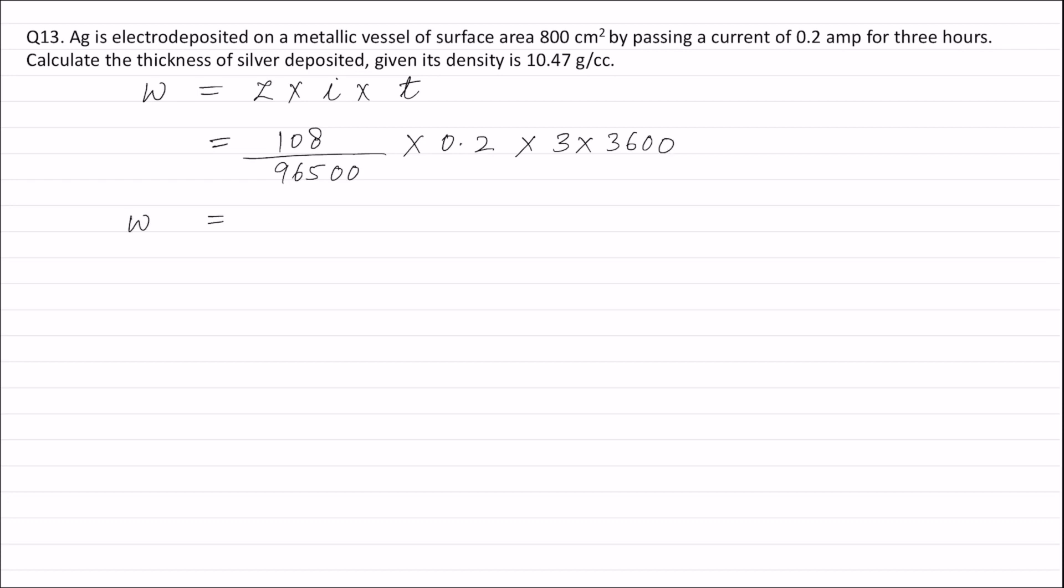Weight of silver is also equal to volume × density. Volume can be written equal to area, which is given as 800 cm², into thickness of the silver deposited—let it be Y cm—into density. Density is given as 10.47 g per cm³.